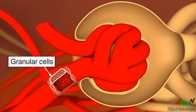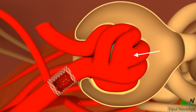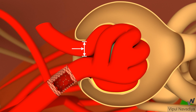Close to the corpuscle, they have specialized cells called granular cells. These are part of the juxtaglomerular apparatus. The arteriole then forms the glomerular capillary tuft, which continues as the efferent arteriole. You might have noticed the diameter of the afferent arteriole is larger than the diameter of the efferent arteriole. This is to maintain pressure inside the glomerulus for filtration.